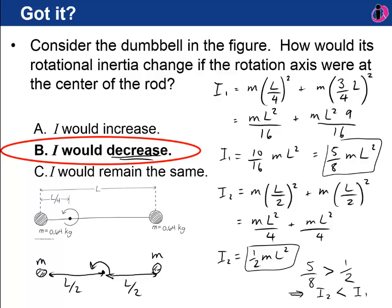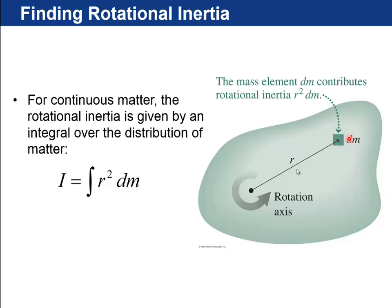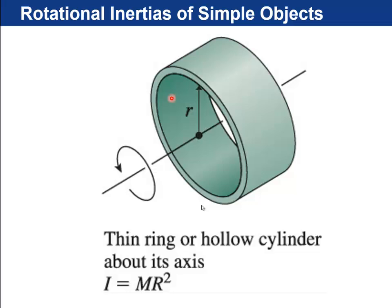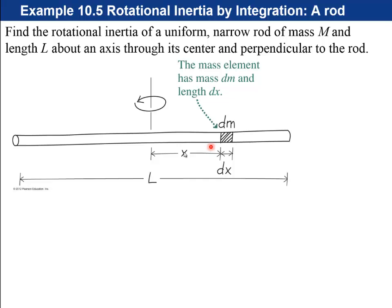For continuous matter, rotational inertia is given by an integral: I = ∫R² dM, where R is the distance of each mass element dM from the rotation axis. For a thin ring or hollow cylinder, all the dMs are at the same distance R from the axis, so R comes out of the integral and you get I = MR². If DMs are at different distances, you must perform the integral.